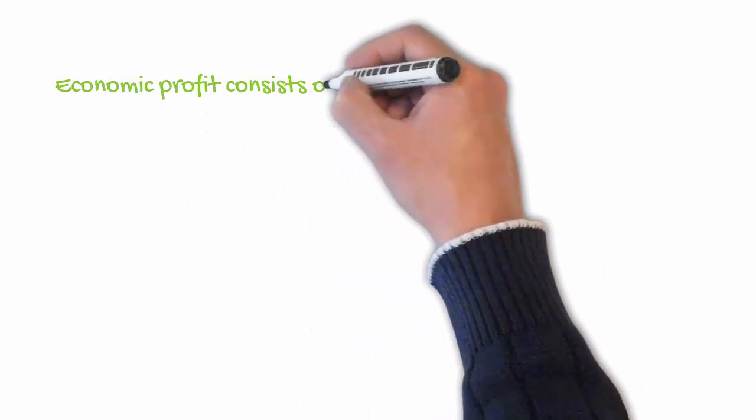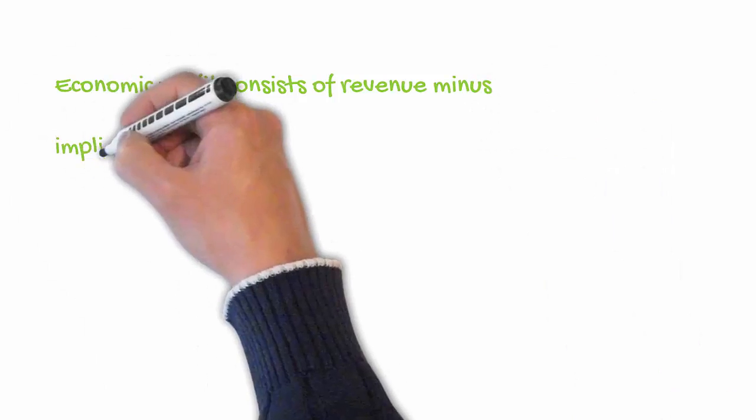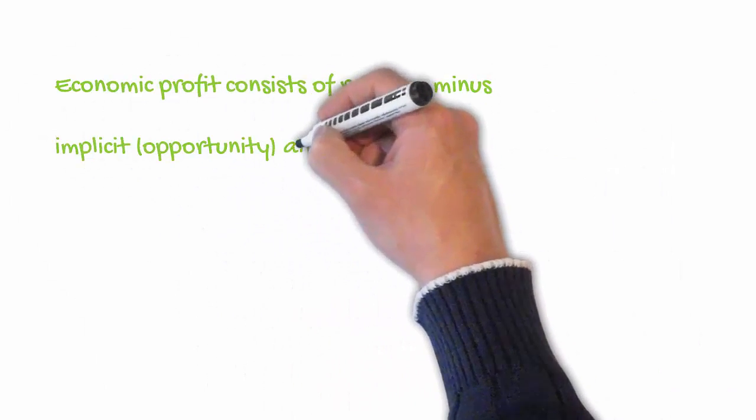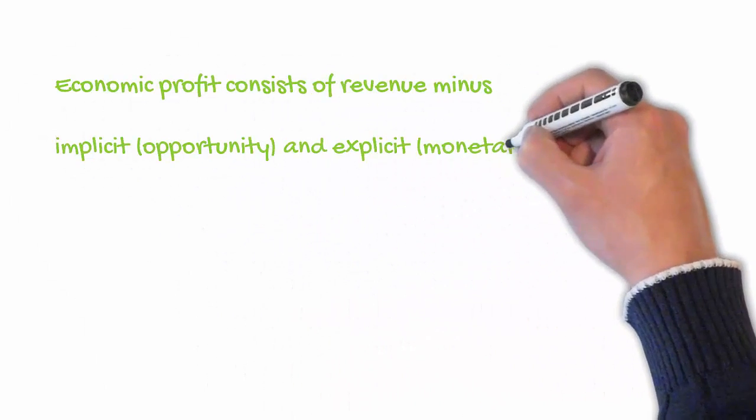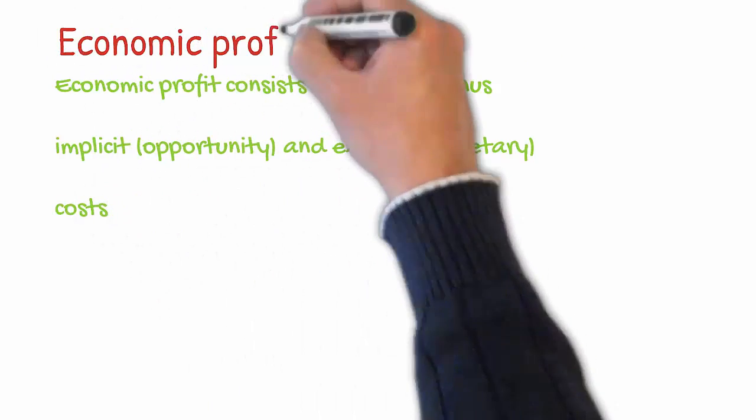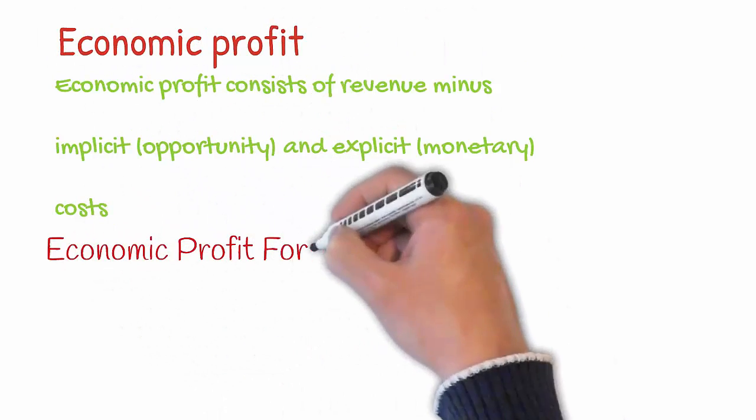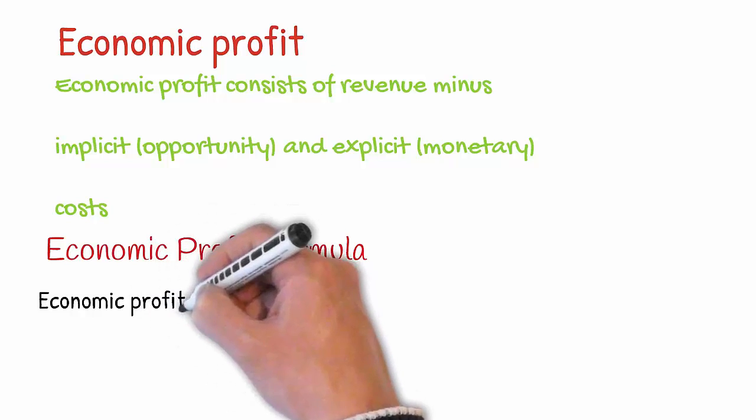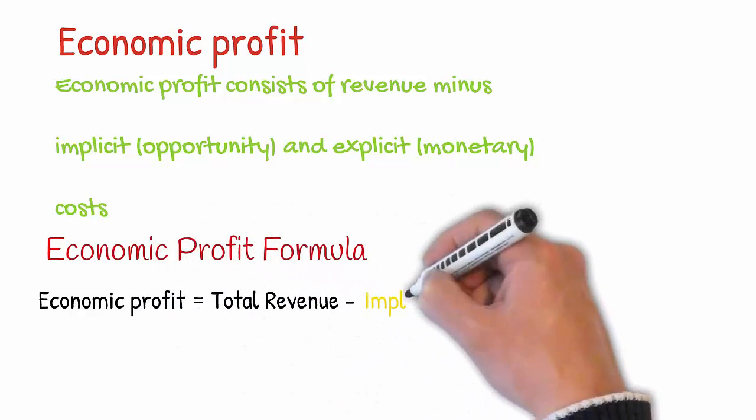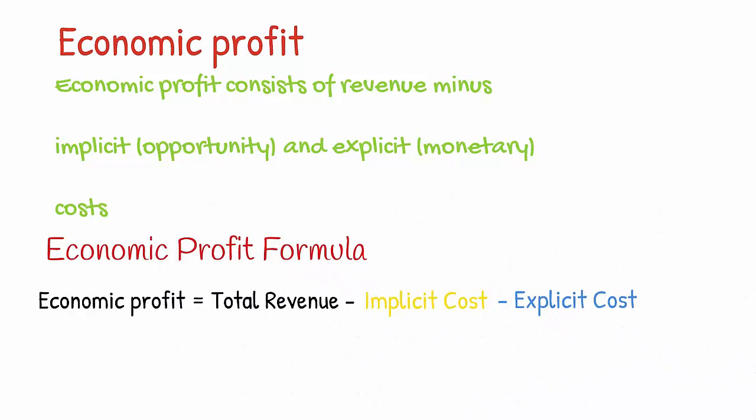Tony, economic profit is defined as total revenue minus total implicit and explicit costs. Implicit cost is the opportunity cost of the business and explicit costs are daily expenses of the business. Economic profit formula equals total revenue less total implicit cost less total explicit cost.